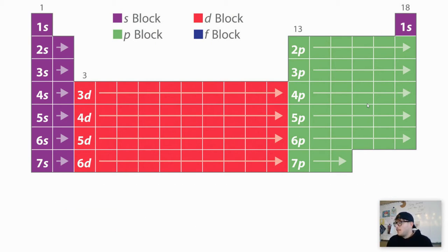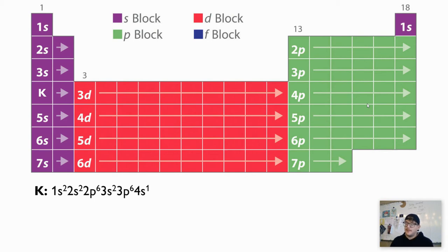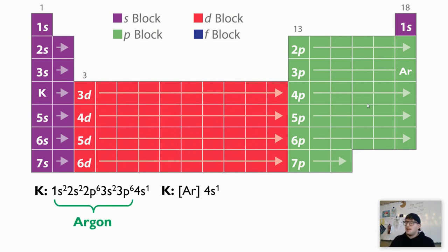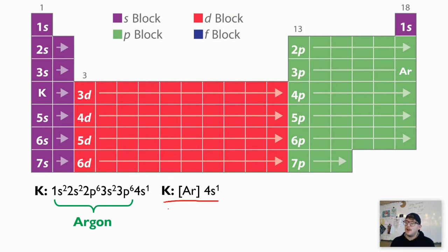Let's do one more: potassium. Potassium falls in the fourth period, and you write out its electron configuration — it ends in 4s1. The noble gas before it is argon. So we remove everything from that configuration that would be argon and substitute argon back in. Now it becomes really short — it's just argon in brackets and 4s1. This is the abbreviated version of potassium. Super simple.